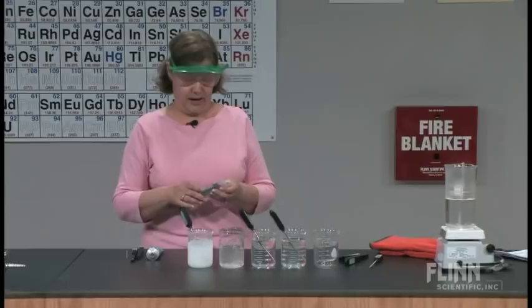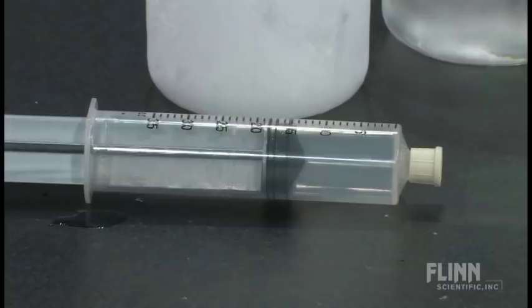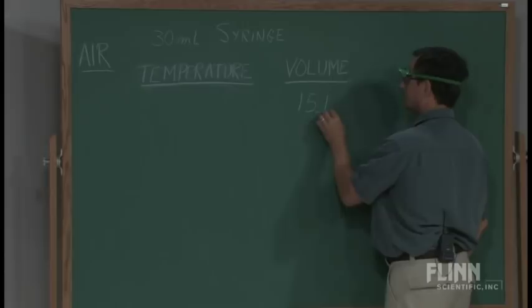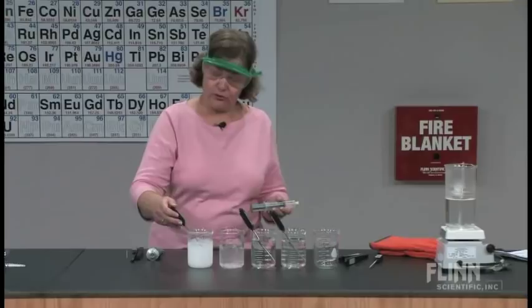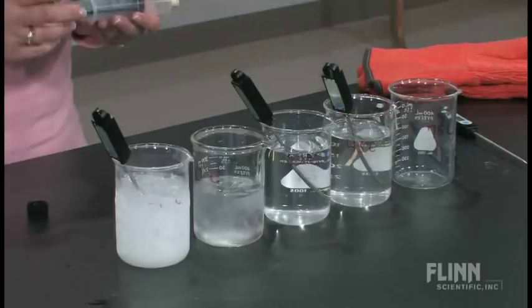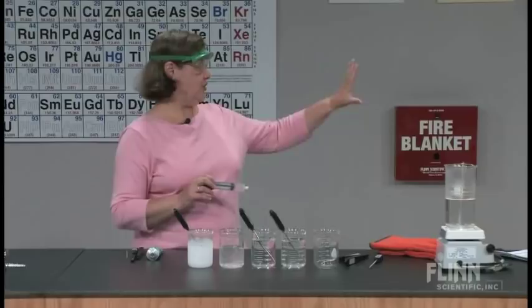I'm going to push it in and out just to get a good reading and let it return to its equilibrium position. I'm reading at the gasket, and I'm going to say that's 15.1 milliliters. The first thing I'm going to do is put it into my coldest temperature bath, which right now is at 9.2 degrees — that's an ice water bath with salt. So 15.1 is our initial volume at room temperature, before it's in any bath.